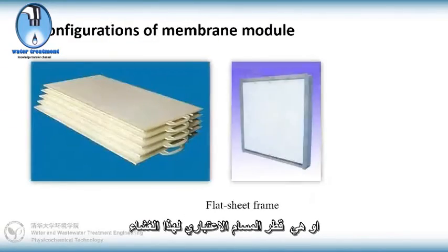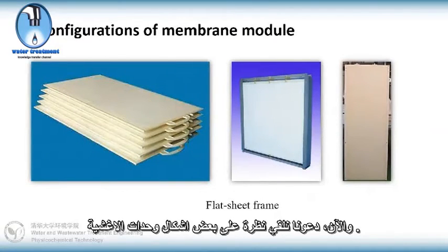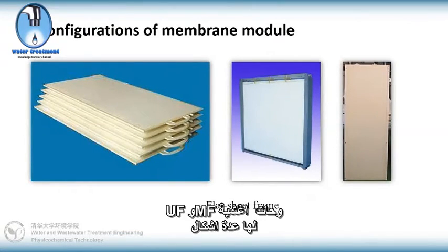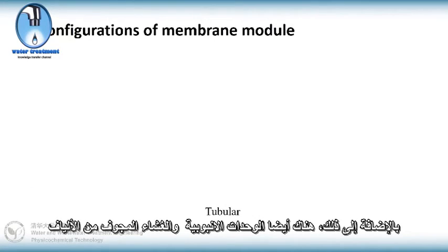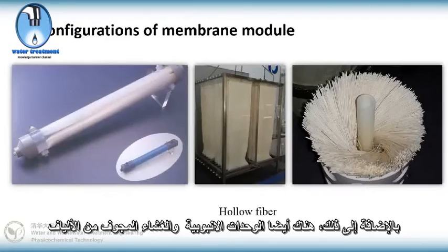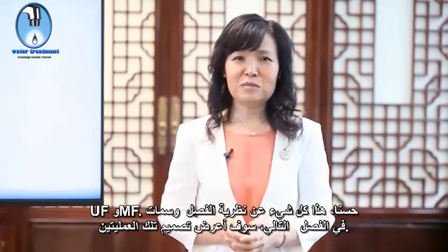Now let's look at some configurations of membrane modules. UF and MF membrane modules have several types: first, the flat sheet module with frame; besides, there are also tubular and hollow fiber membrane modules. That's all about the separation theory and features of UF and MF. In the next section, I'll introduce the design of these two processes.